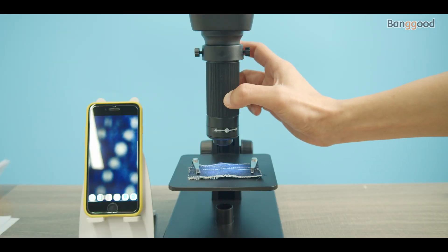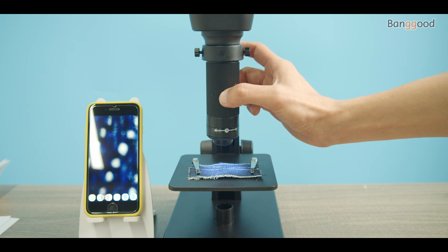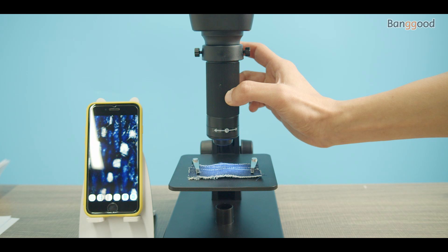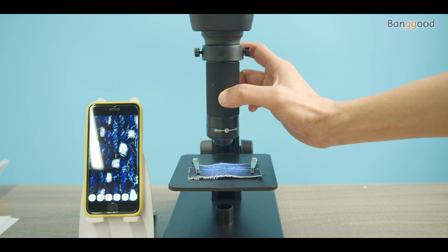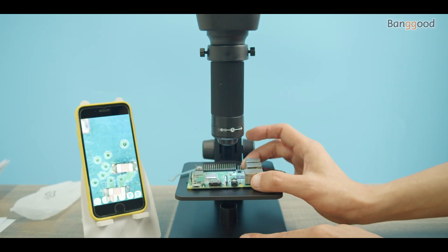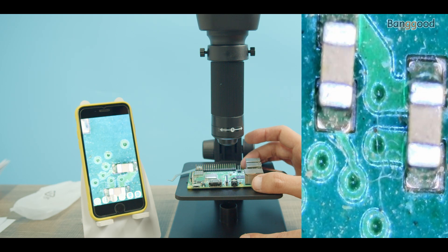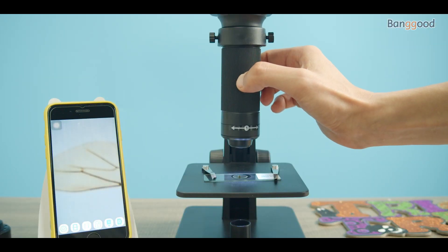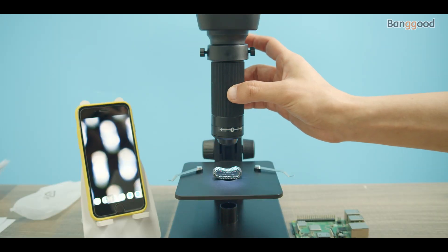The microscope includes two lenses that can be used for different purposes. Lens number one can provide up to 500 times magnification, suitable for low magnification such as PCB precision welding observation, observation of insects, and jewelry inspection.